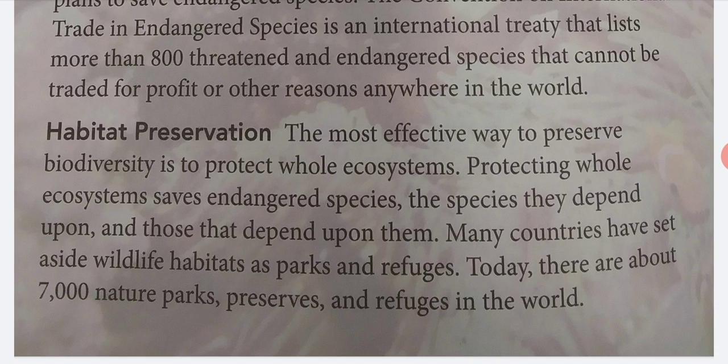The most effective way to preserve biodiversity is to protect whole ecosystems. Protecting whole ecosystems saves endangered species, the species they depend upon, and those that depend upon them. Many countries have set aside wildlife habitats as parks and refuges. Today, there are about 7,000 nature parks, preserves, and refuges in the world.